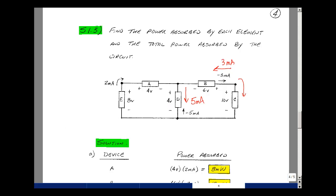Lastly, for element E, to have current entering the plus terminal, turn the direction around, which changes the sign of the current. The power absorbed is 8 volts times minus 2 milliamps, or minus 16 milliwatts.